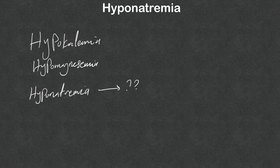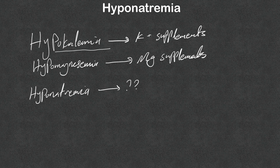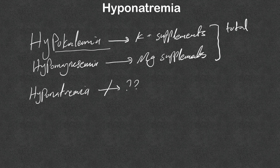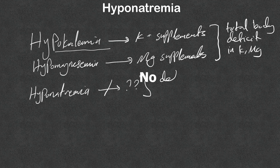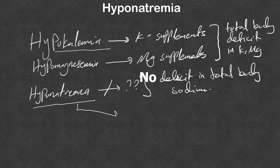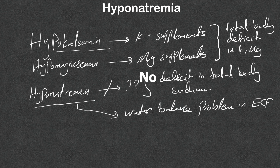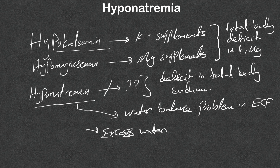Have you ever asked yourself: why do we treat hypokalemia with potassium supplements, and hypomagnesemia with magnesium supplements, while in hyponatremia we don't simply give sodium supplements or sodium tablets? That's because in hypokalemia and hypomagnesemia there is a total body deficit, while in hyponatremia there is really no deficit in total body sodium. Hyponatremia is a water balance problem in the extracellular fluid.